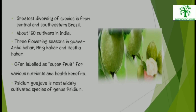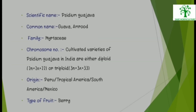Psidium guajava is the most widely cultivated species of genus Psidium. Scientific name of Guava is Psidium guajava. Common name is Guava or Amrood. Family is Myrtaceae. In cultivated varieties of Psidium guajava found in India, chromosome number is either diploid (2n = 22) or triploid (3n = 33). Origin is Peru, tropical America, South America, or Mexico.